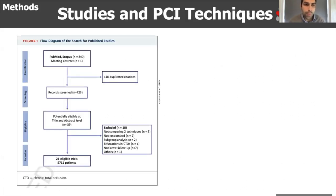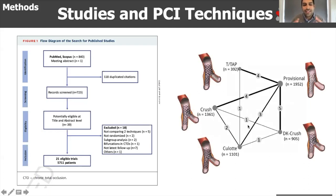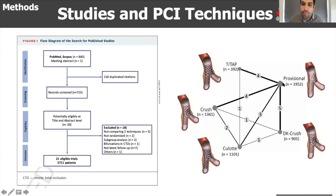When we performed the search, we found 840 citations, from which we identified 21 eligible trials comprising more than 5,700 patients. In the network plots, the size of the bubbles indicates the number of patients included in each specific technique, and the thickness of the lines connecting the dots reflects the number of trials comparing those two techniques.